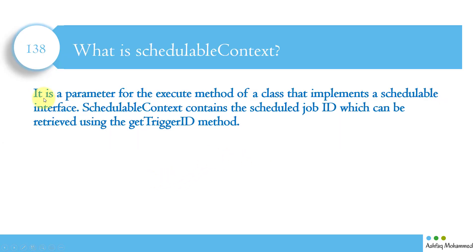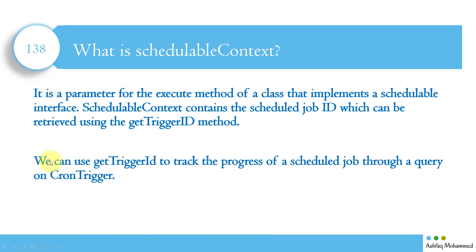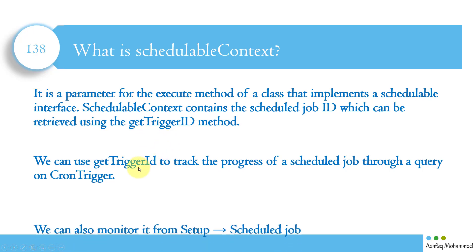What is SchedulableContext? It is a parameter for the execute method of a class that implements the Schedulable interface. When we implement the Schedulable interface, we can use SchedulableContext. SchedulableContext contains the scheduled job ID, which can be retrieved using the getTriggerID method. We can use getTriggerID to track the progress of the scheduled job through a query on the CronTrigger object — we'll learn about CronTrigger in a moment.